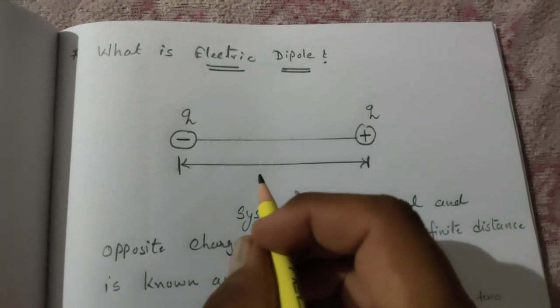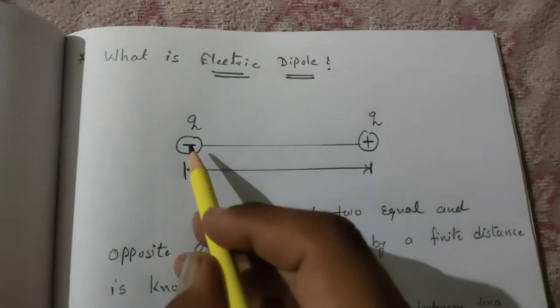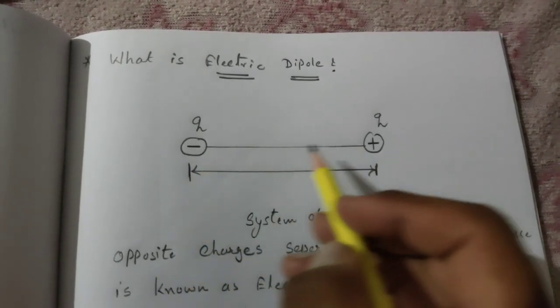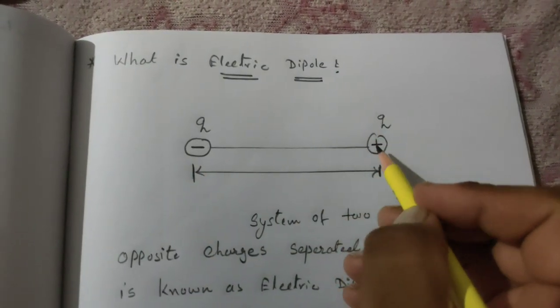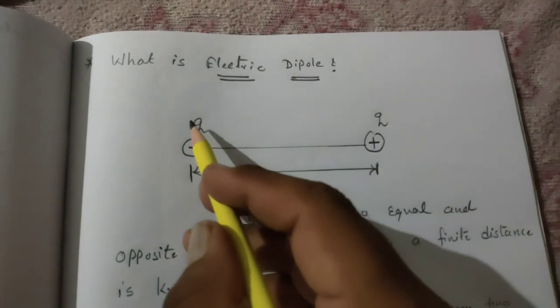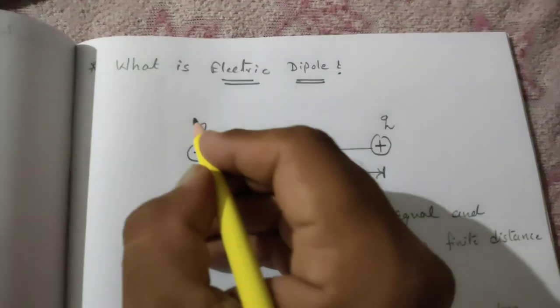Here in the diagram you can see that we have two charges. The first one is a positive charge that is over here, and the second is over here which is negative.